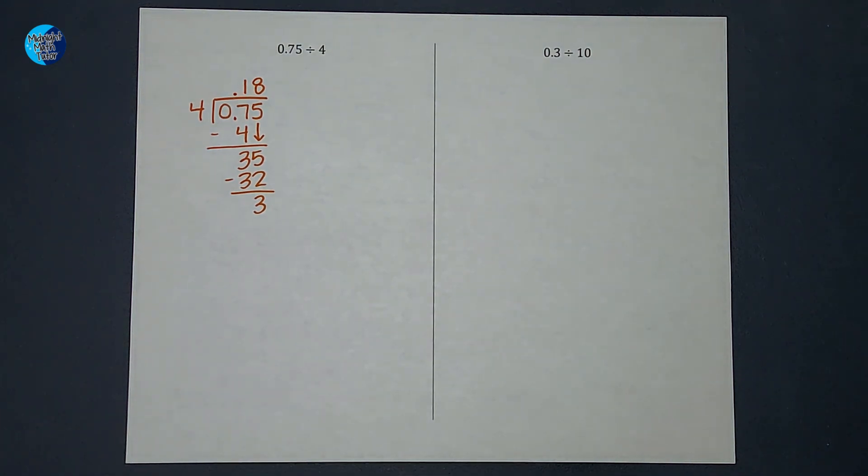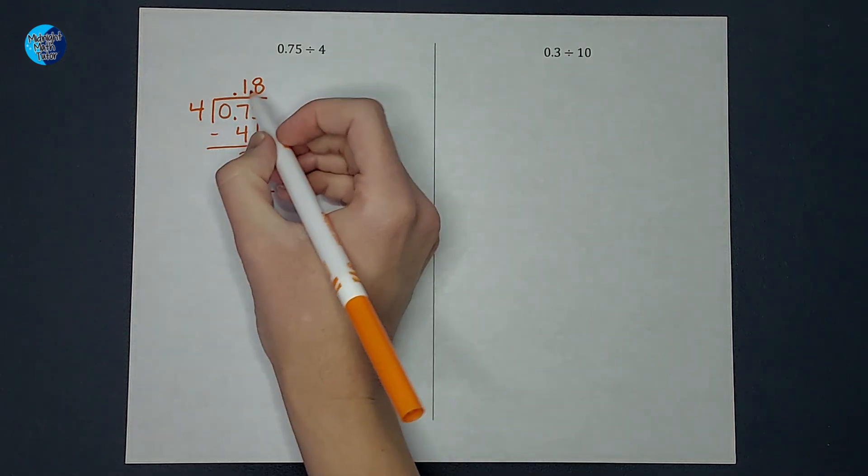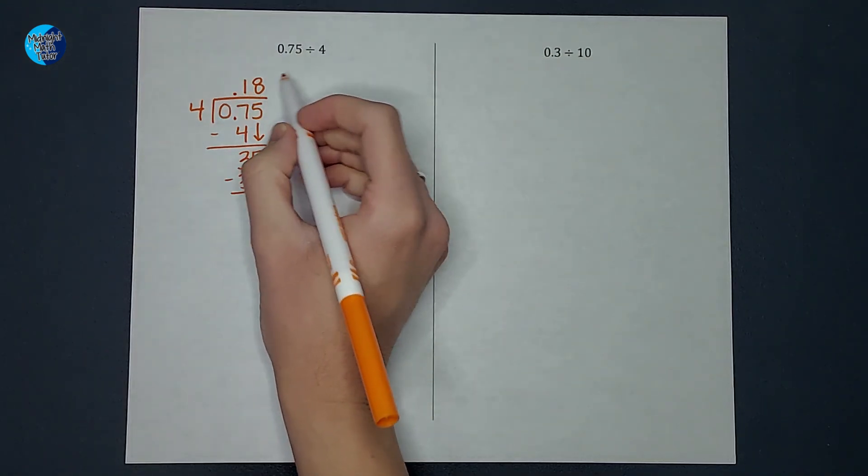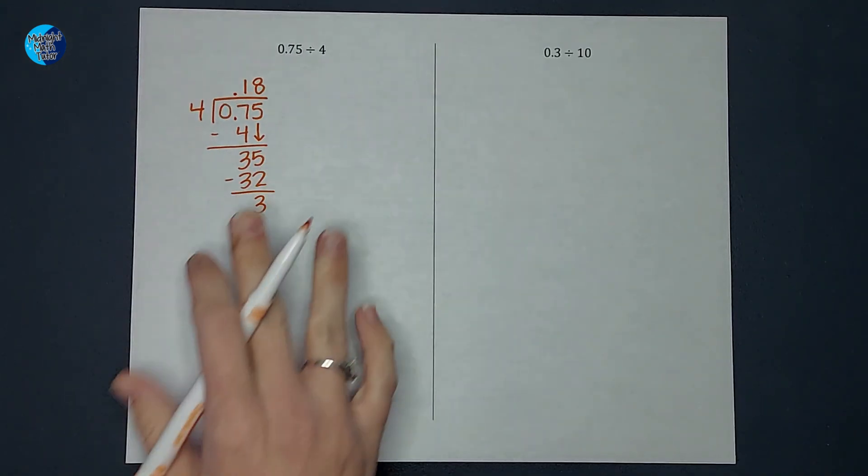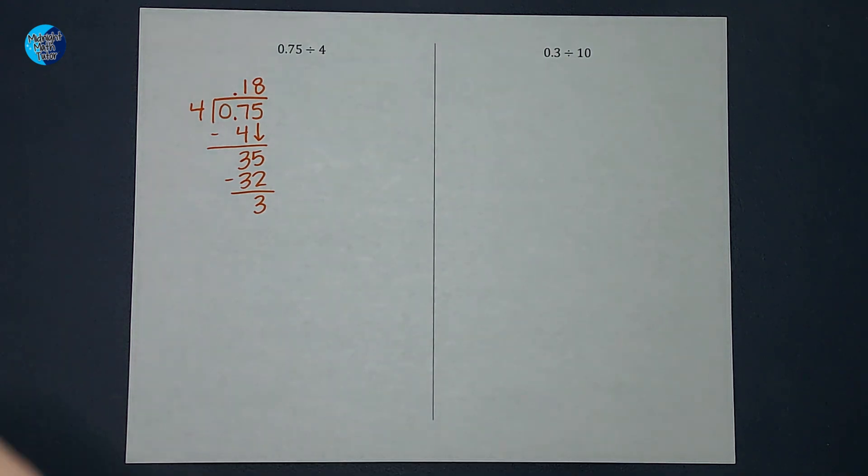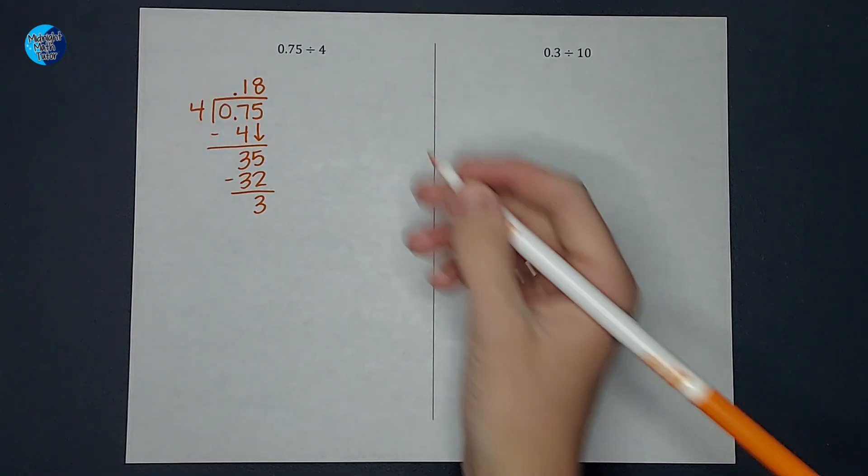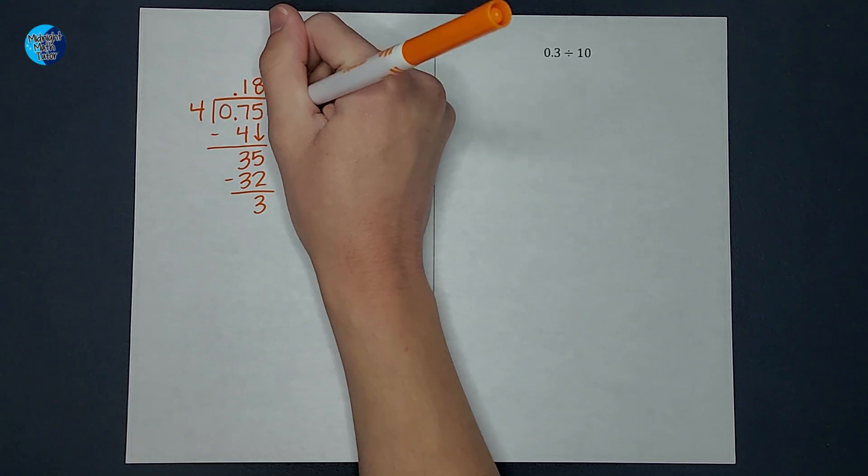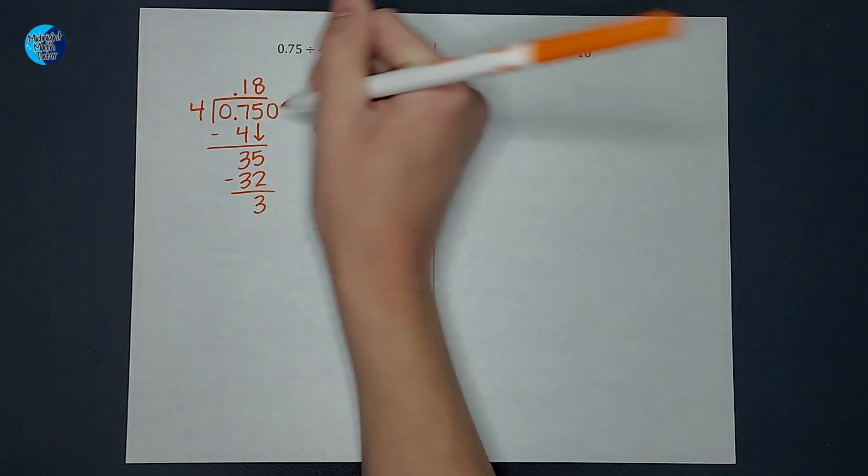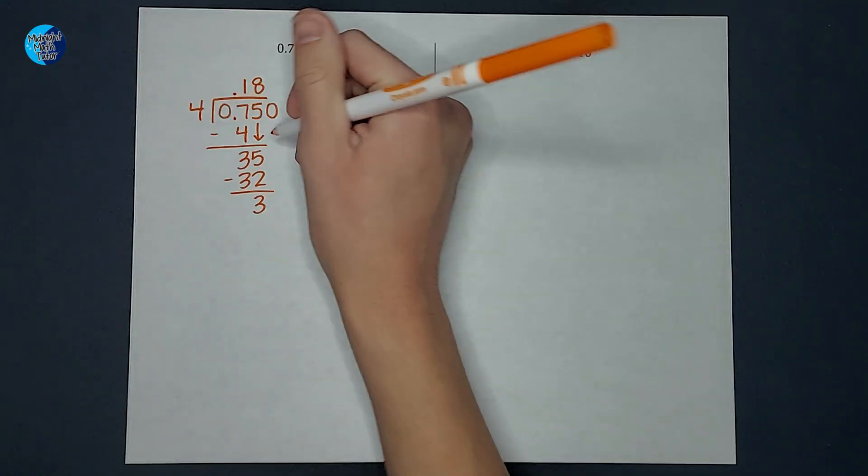Now this is where in the olden days when you're in elementary school you might have done 0.18 remainder 3, right? But we don't really do that anymore. We like it to continue with our decimal. So I can add a 0 here because we are behind the decimal. So I add that 0,